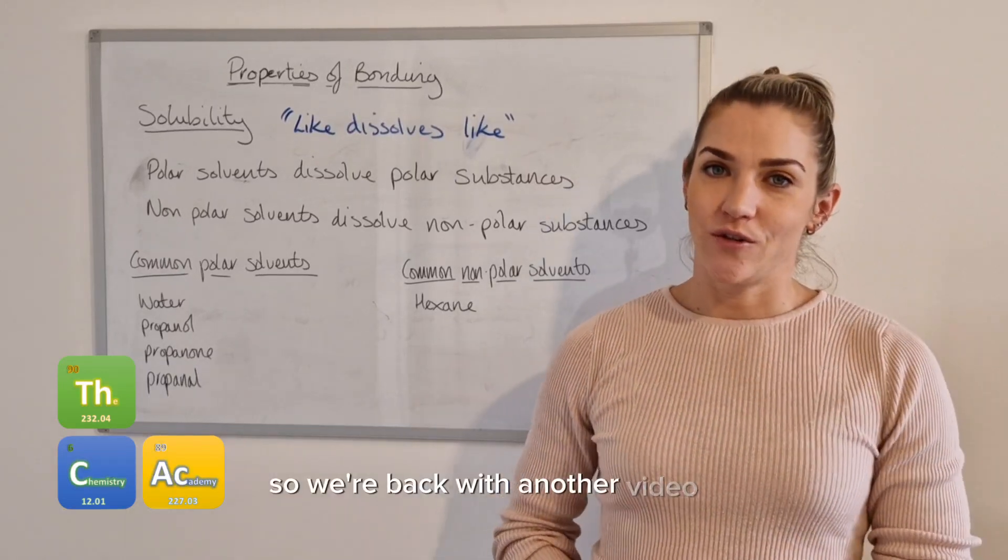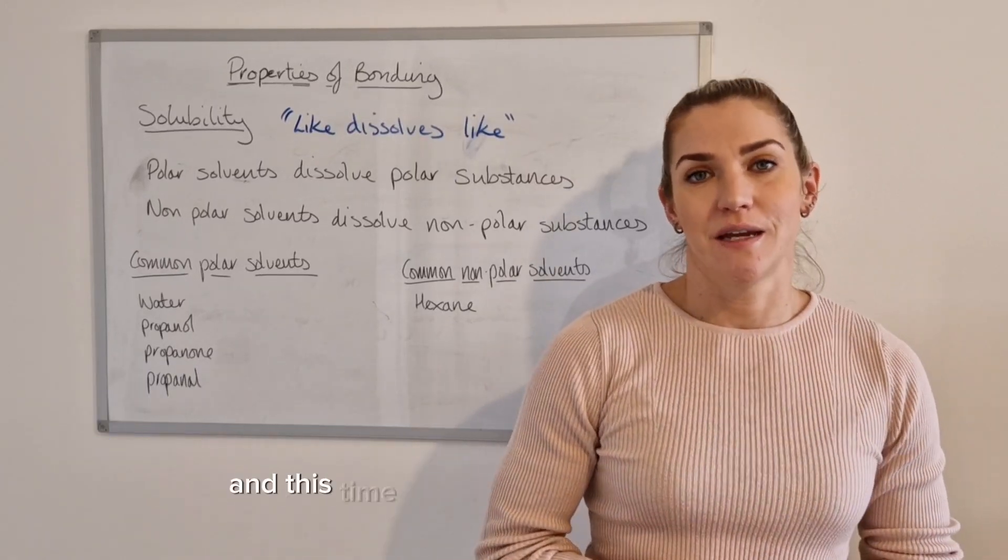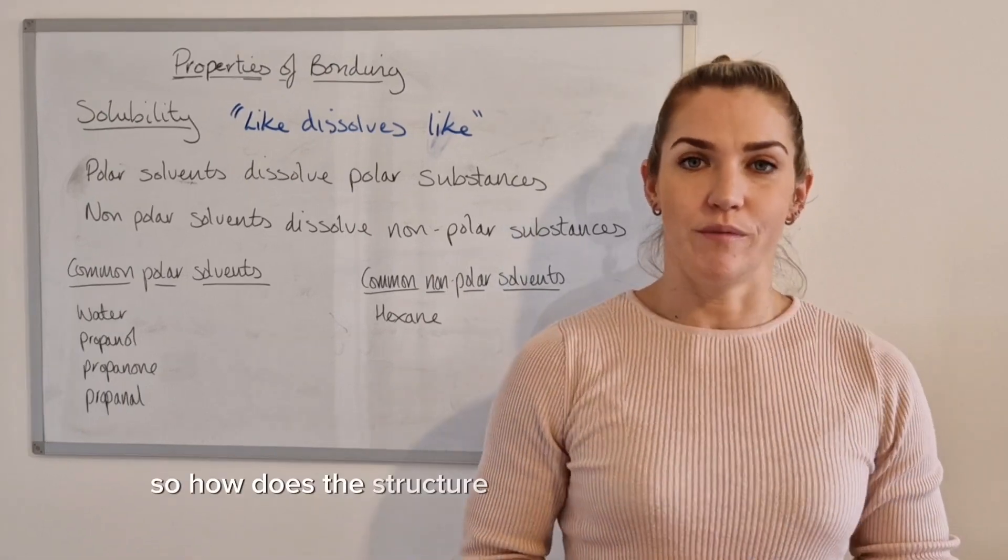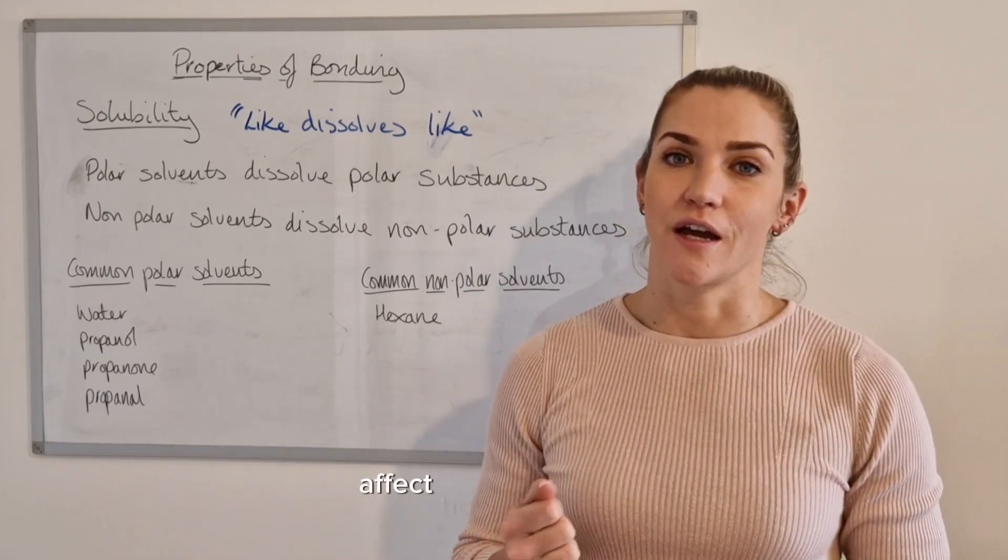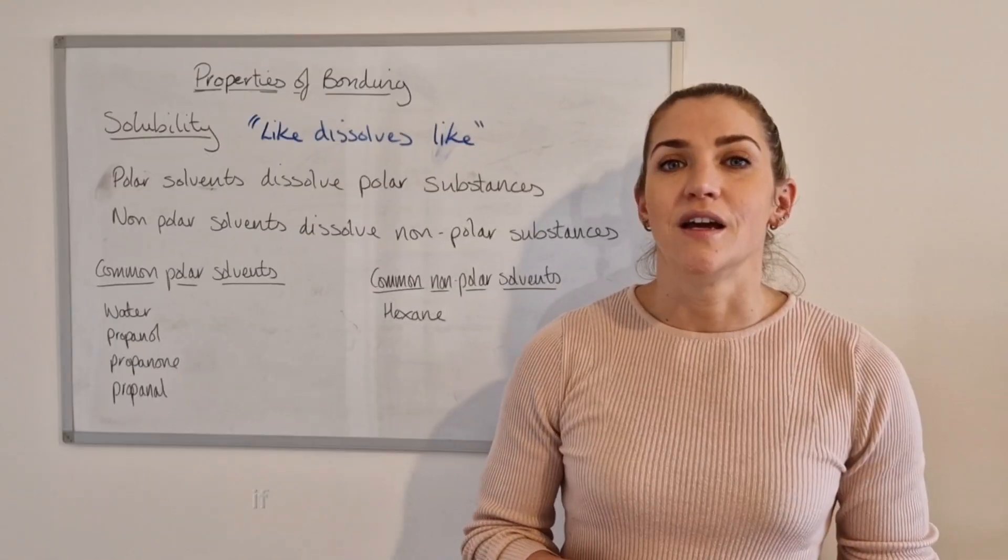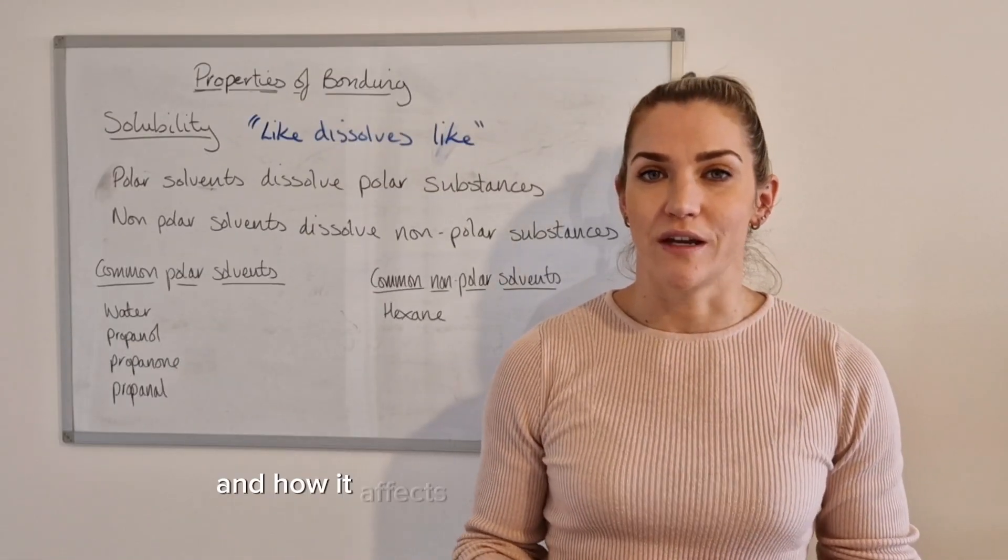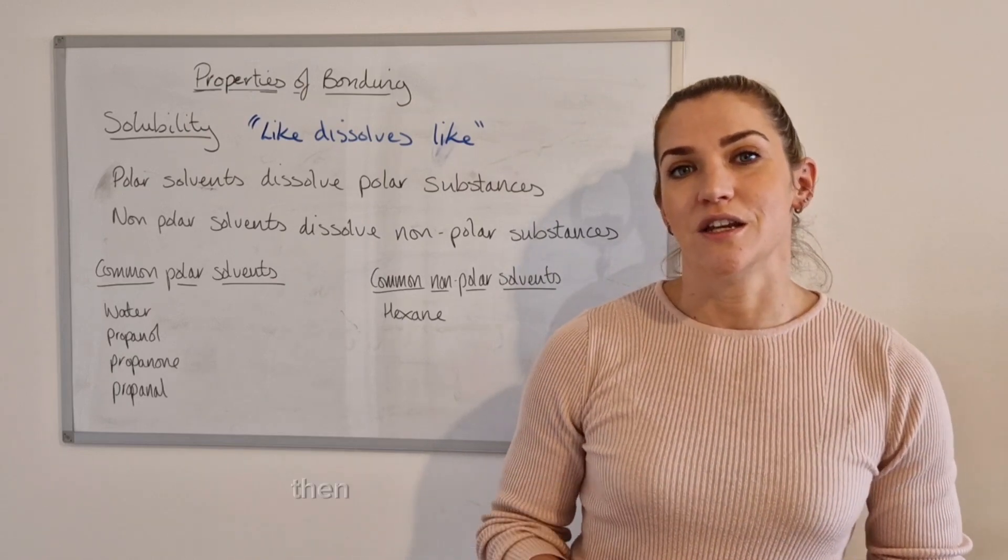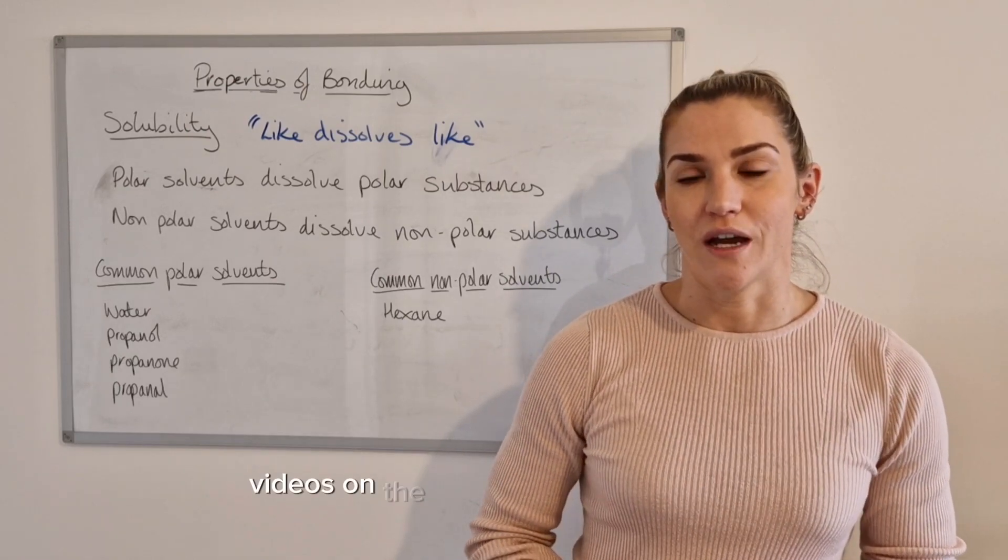Hey everyone, so we're back with another video on the properties of bonding and this time we're looking at the property of solubility. So how does the structure and bonding of a substance affect how soluble it is? If you're looking to find out more about the properties of bonding and how it affects melting and boiling points, viscosity and volatility, then you can check out my other videos on the Higher Chemistry playlist.